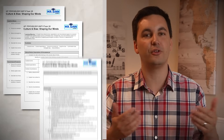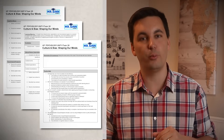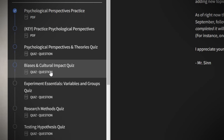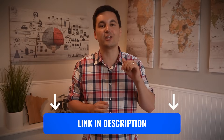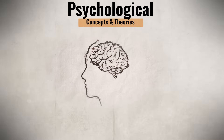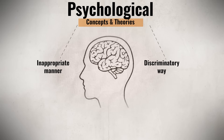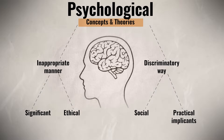We have to change gears now and talk about applying psychological concepts and theories. If psychological concepts or theories are applied to situations or individuals in an inappropriate or discriminatory manner, it can have significant ethical, social, and practical implications. For instance, misdiagnosing a mental health condition due to cultural biases or relying on outdated stereotypes could lead to ineffective or harmful treatments.